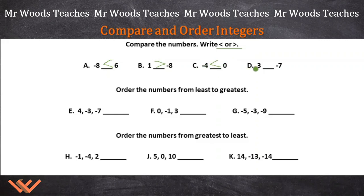D, 3, blank, negative 7. 3 is greater than 0, and negative 7 is less than 0. See how easy this is? So greater than and less than. 3 is greater than negative 7.